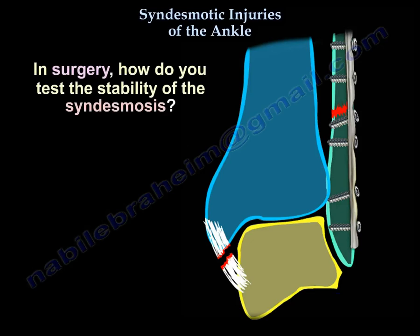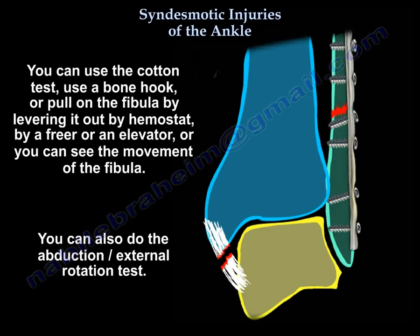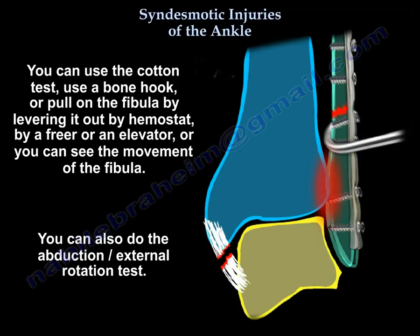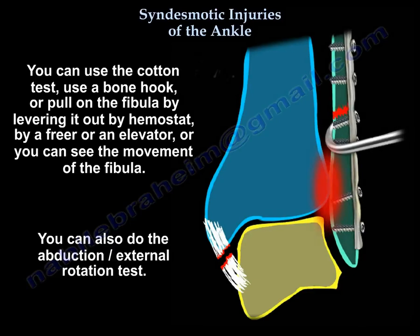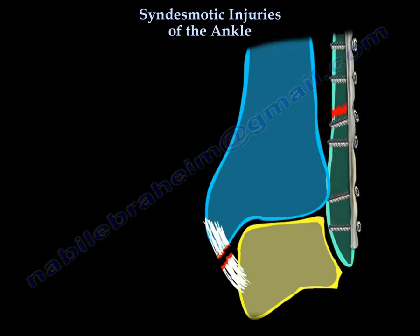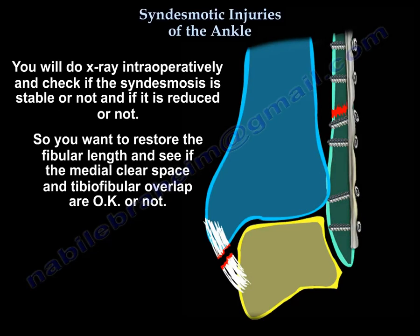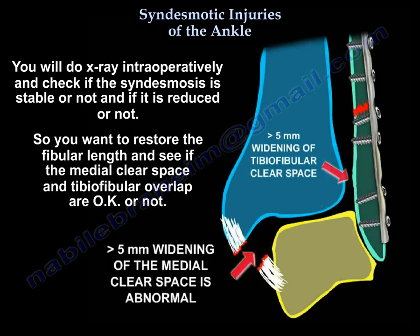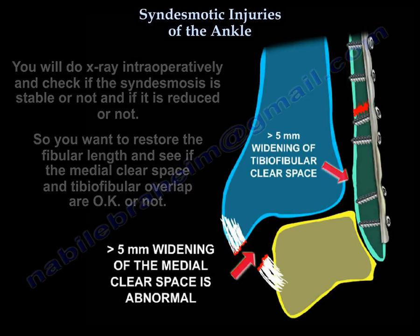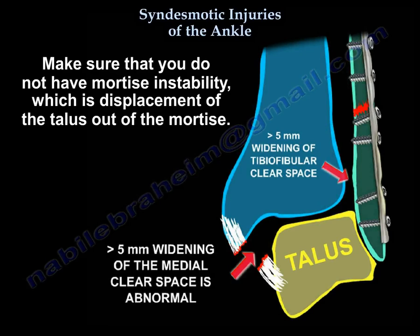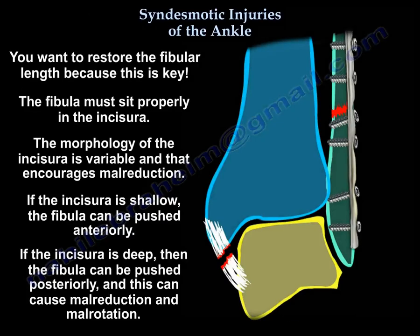In surgery, how do you test the stability of the syndesmosis? You can use the cotton test. You can use a bone hook or pull on the fibula by levering it out with a hemostat, freer, or elevator. Or you can observe the movement of the fibula, or do the abduction external rotation test. You will do intraoperative x-rays and check if the syndesmosis is stable and reduced. You want to restore fibula length and verify that the medial clear space and fibular overlap are acceptable. Make sure you don't have mortise instability — displacement of the talus out of the mortise.